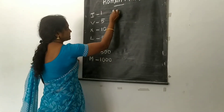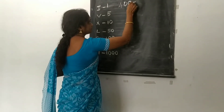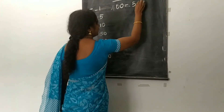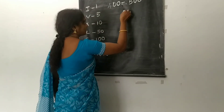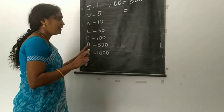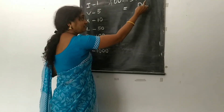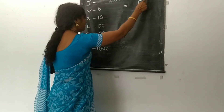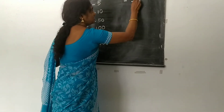The next number: 400. We write 400 as 500 minus 100. The symbol for 500 is D, and since it is subtraction, C is written on the left side of D. Therefore, 400 is written as CD.